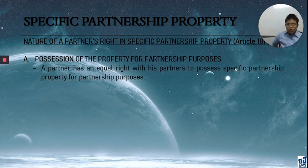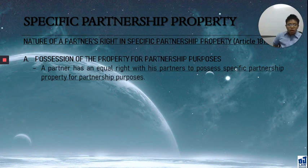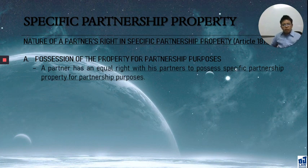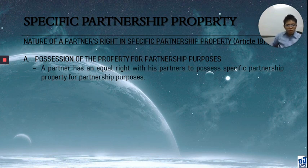A partner has an equal right with the other partners to possess specific partnership property, but the possession must be for partnership purposes only. So if a partner uses specific partnership property for personal purposes and there is profit, it will belong to the partnership. Also, if a partner is wrongfully excluded from possession of the specific partnership property, he can ask for accounting — he can ask for a formal accounting, and this is one of the exceptions.